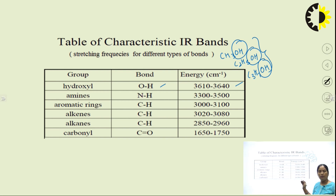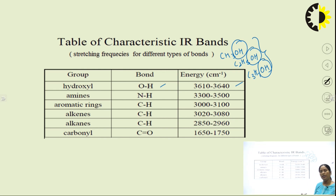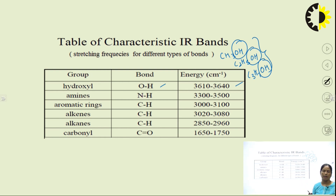Whenever we want to find out what functional group is present in an unknown molecule or a newly formed molecule, we can study this simpler part of the spectrum — the functional group region. Each and every particular functional group has a particular peak in this functional group region, making it very helpful in identifying functional groups.